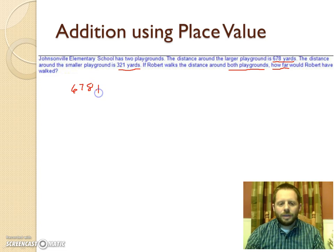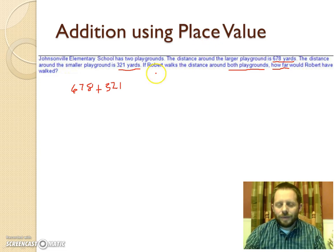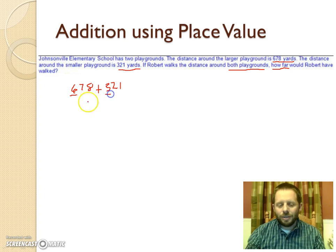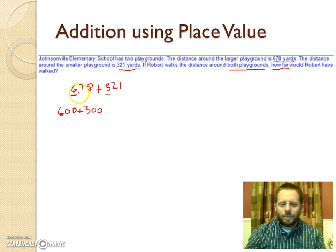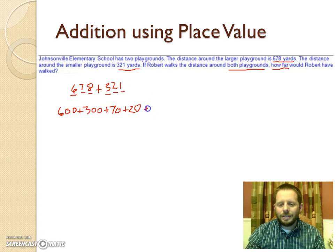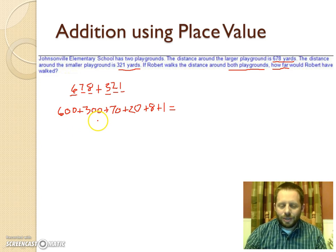We're adding 678 and 321. Using place value, we think about what is the place value of each digit and add like place values together. We have a 6 in the hundreds place and a 3 in the hundreds place, so we add 600 plus 300. Then we have a 7 in the tens place and a 2 in the tens place, so we add 70 and 20. That makes 900 for the hundreds.